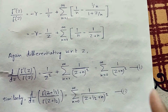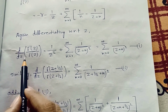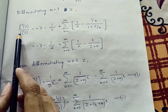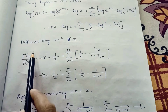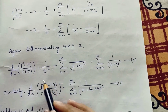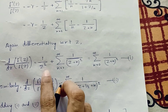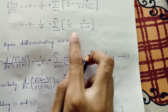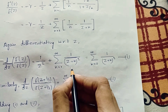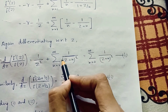Simplifying, the n cancels and it becomes 1/(z(z+n)). Now we differentiate again with respect to z. The left side becomes d/dz of [γ′(z)/γ(z)]. Since −γ is a constant it becomes 0, −1/z differentiates to 1/z², and 1/n is constant, so inside the summation we get 1/(z+n)².